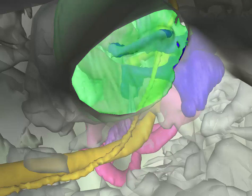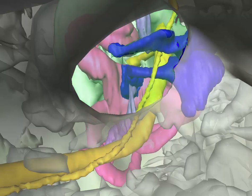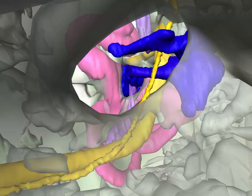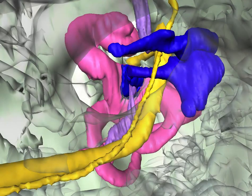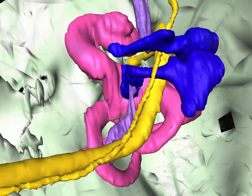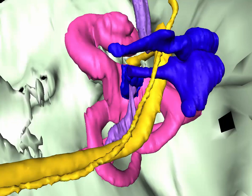When the tympanic membrane is removed, we can see the chorda tympani nerve as it crosses lateral to the long process of the incus and medial to the neck of the malleus. As it passes medial to the neck of the malleus, it always passes superior to the insertion of the tensor tympani tendon. This can be seen here.